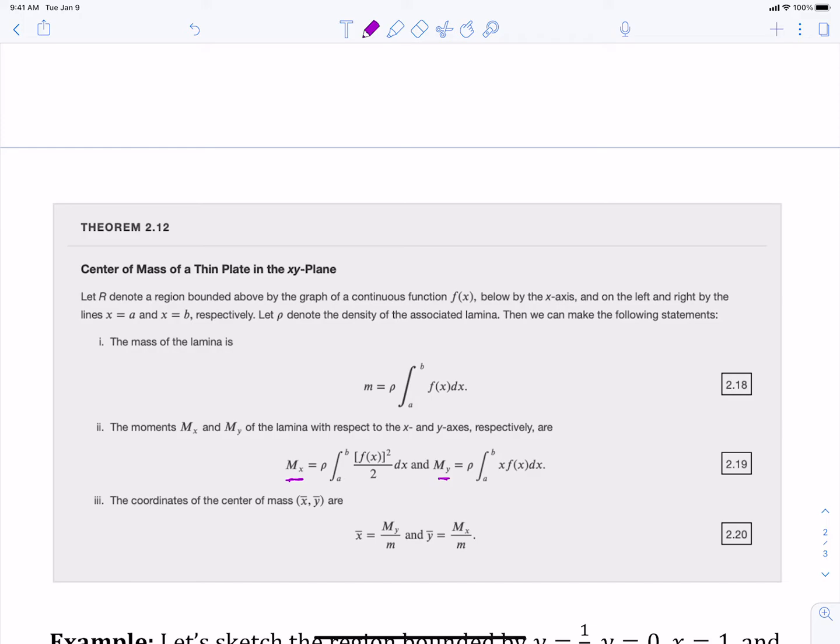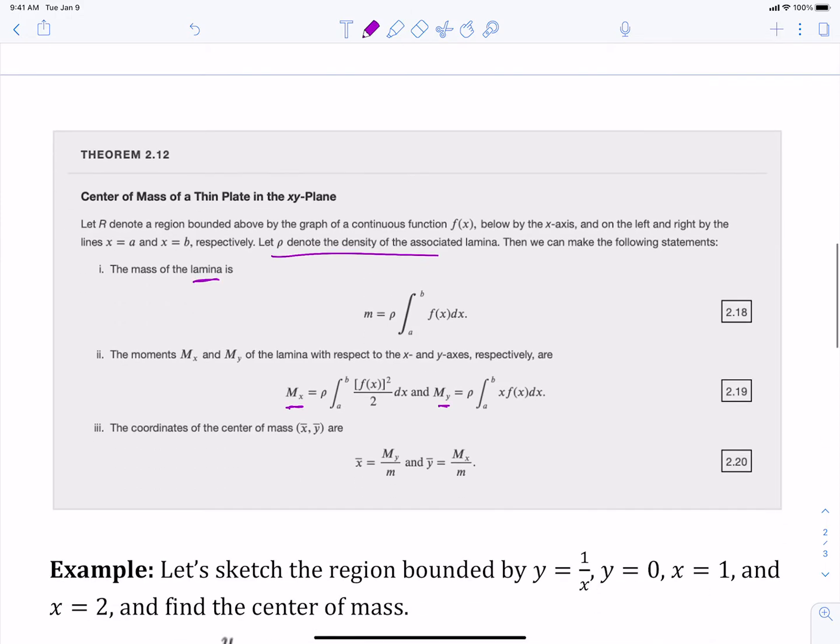So we've got the mass of our lamina. So that's what these regions are called, we call them a lamina. And then we've got that density function for our lamina, and then we've got our two moments. So again, how far these things are from the x and the y-axis. And then our center of mass is just like we had when we were in two dimensions with the weights, so it's those moments divided by our total mass.